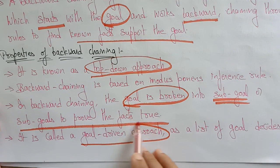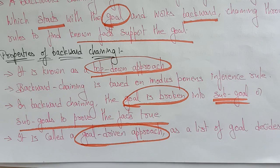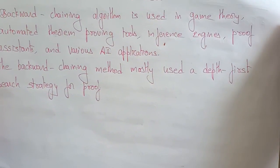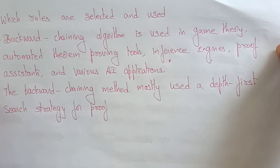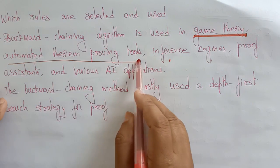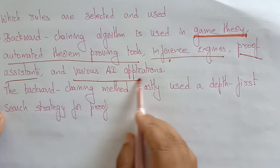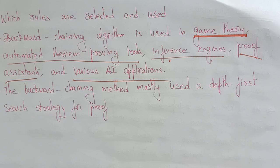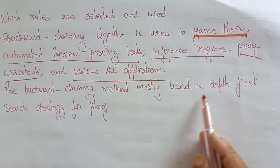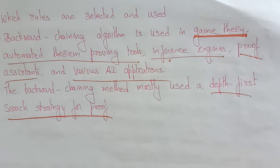Backward chaining is also called a goal-driven approach, because with the help of the goal we are reaching to the data, and a list of goals decides which rules are selected or used. The backward chaining algorithm is used in game theory, automatic theorem proving tools, inference engines, proof assistants, and various artificial intelligence applications. The backward chaining method mostly uses a depth-first search strategy for the proof.